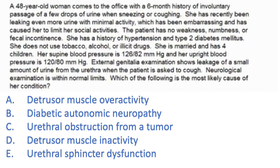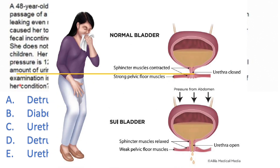For the first question, read the last two lines first. The external genital examination shows leakage of a small amount of urine from the urethra when the patient is asked to cough — that already gives it away. A woman who gets leakage of urine when coughing almost immediately tells you this is stress incontinence.